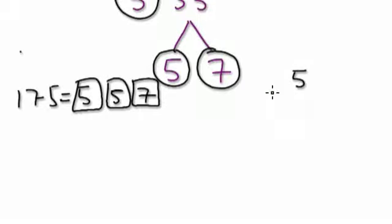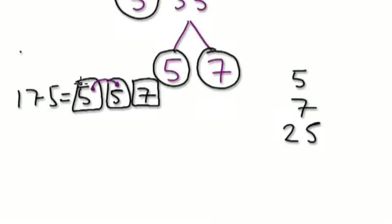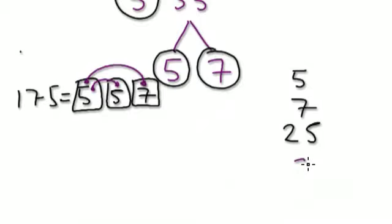So if you want to know all the factors — 5 would be a factor, 7 would be a factor. Let's combine the two 5s — 25 would be a factor. A 5 and a 7 — that would be 35.